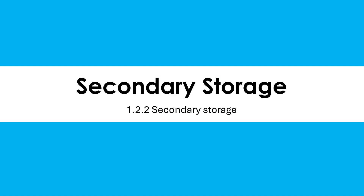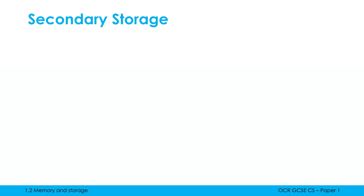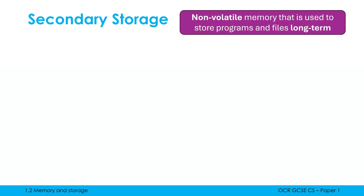We're going to have a look at what secondary storage is, what it's used for, and some of the main secondary storage devices. Secondary storage is non-volatile memory that is used to store programs and files long term. Non-volatile means when power is turned off all of the data is retained. Long term means it won't just last for an hour or a day or a week — it'll sit there permanently until we delete it.